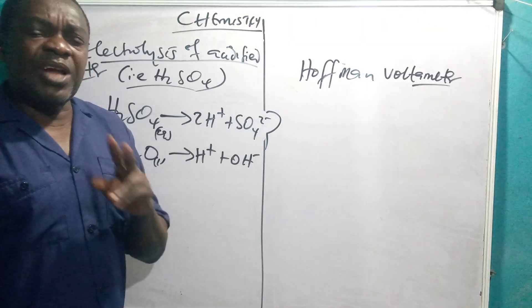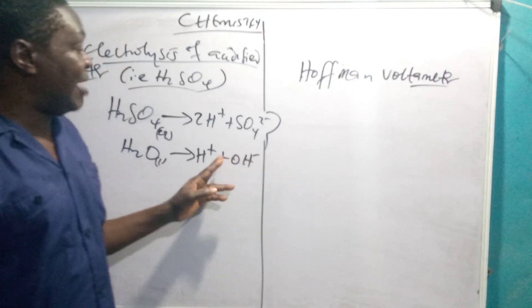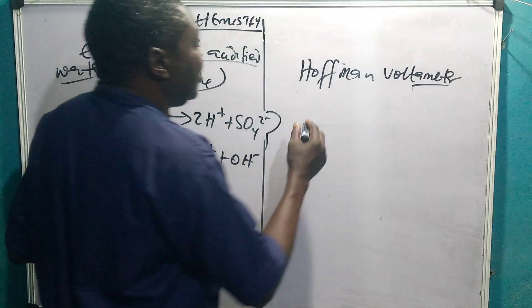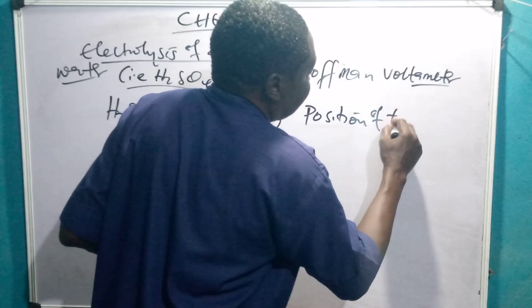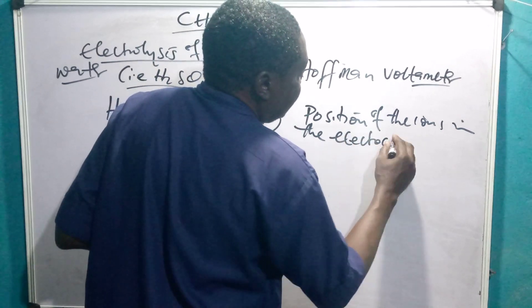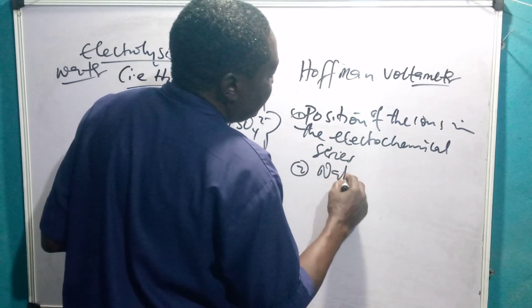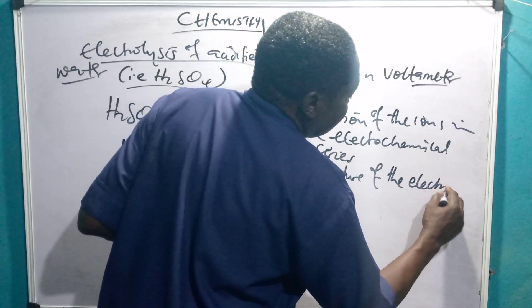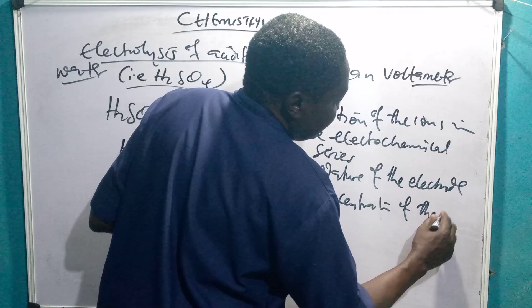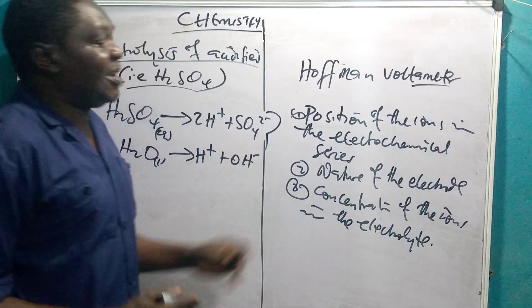Now after undergoing ionization, there will now be competition. Remember, there are three factors of electrolysis or the three factors that govern the way these ions are being discharged or carried to the anode or the cathode. The three factors are: first, position of the ions in the electrochemical series or activity series; the second one is the nature of the electrode; and the third one is the concentration of the ions in the electrolyte. These are the three factors you always put in your mind.